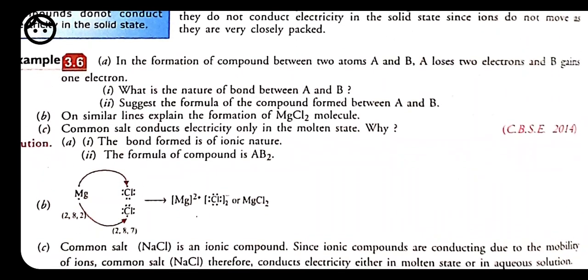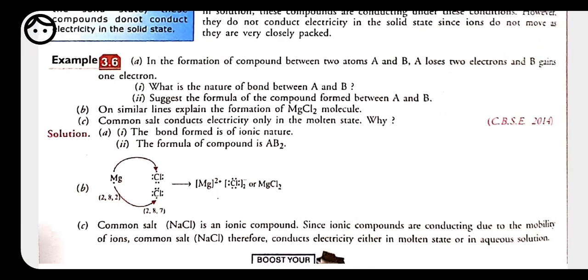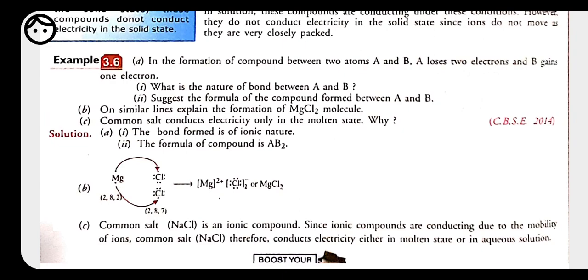Another question: why does common salt (NaCl) conduct electricity only in the molten state and not in the solid state? In the solid state, all ions are in bonded form and not free to move, so it does not conduct electricity. But in the molten form, the ions acquire their charges and become free to move, so at that time NaCl is able to conduct electricity. That's all for today — we will discuss the rest in the next class. Thank you.